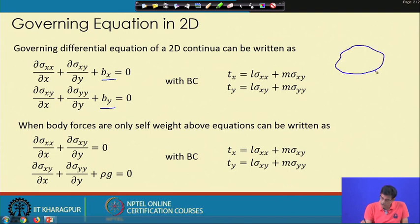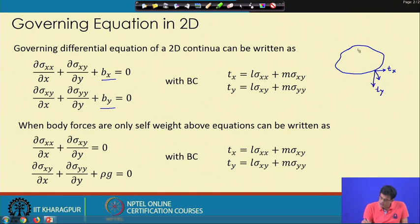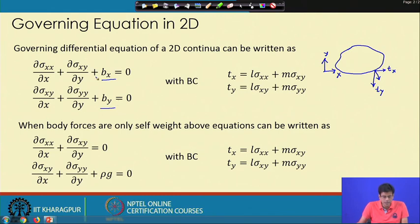Along with the governing equation, we need the traction boundary condition. If n is the normal direction, then tx and ty are the traction forces in the x-y system. We will be working with this 2D system throughout.